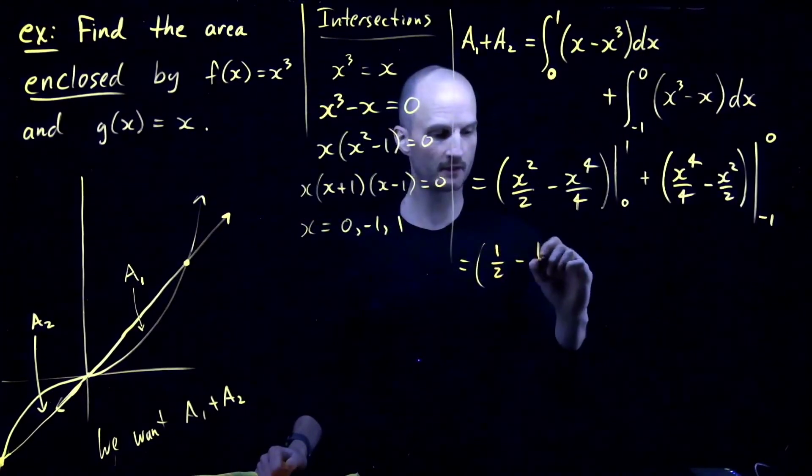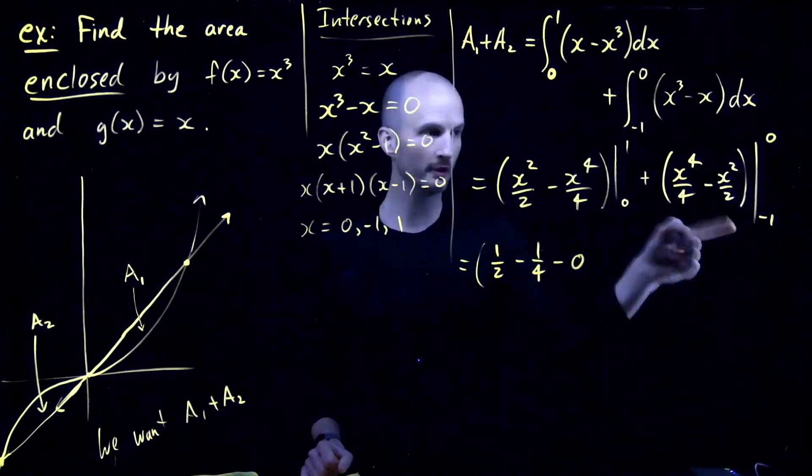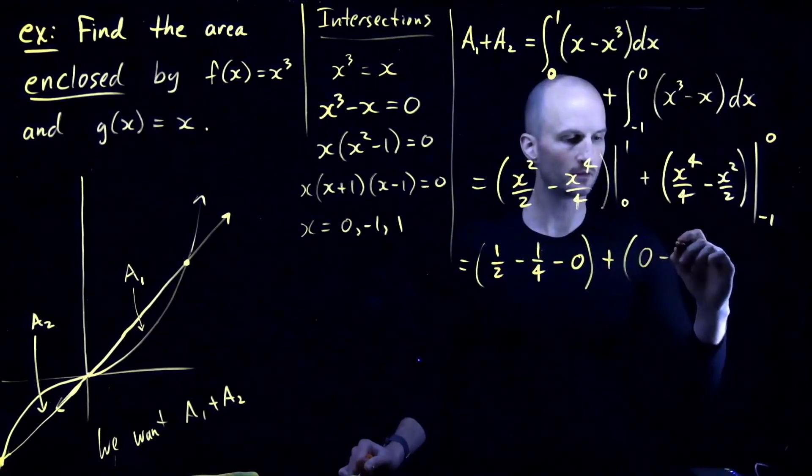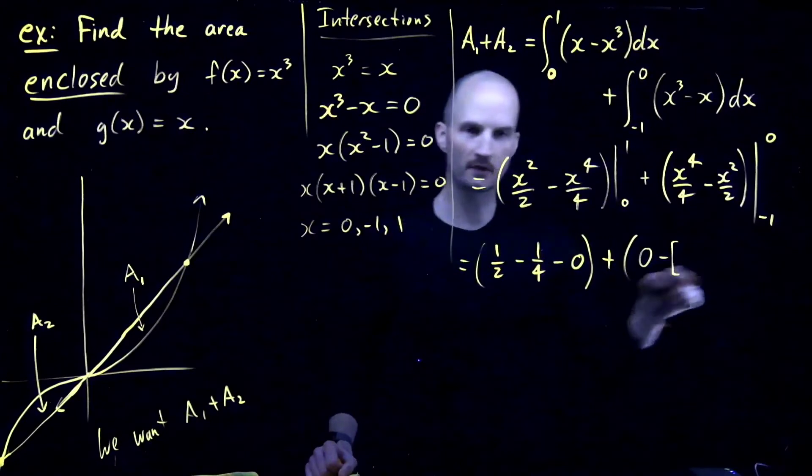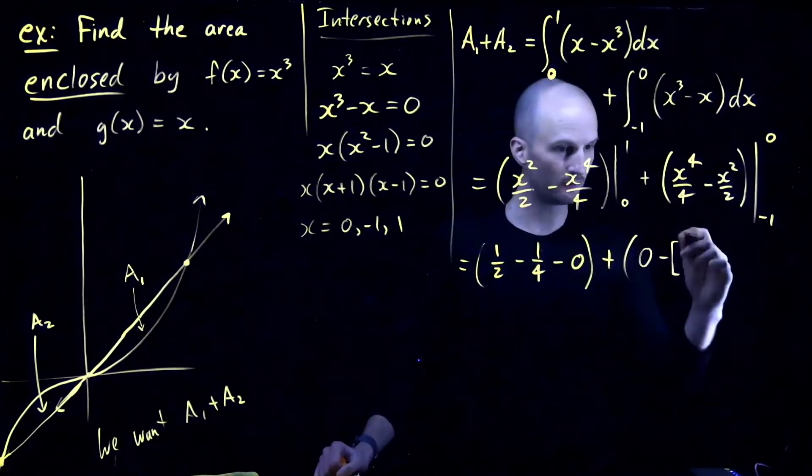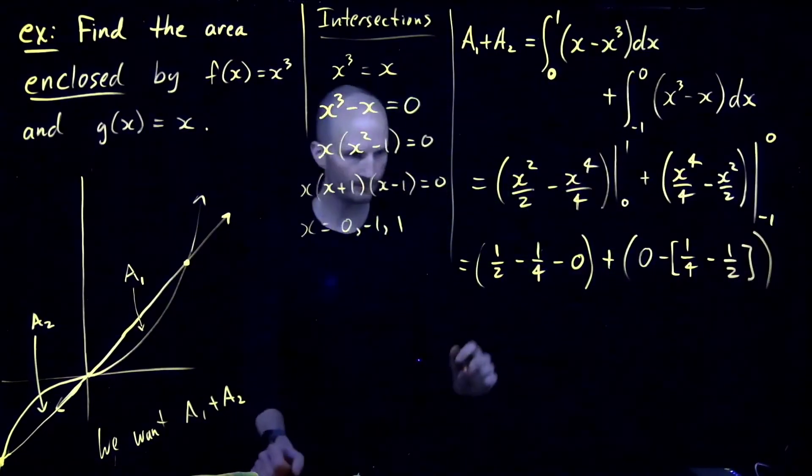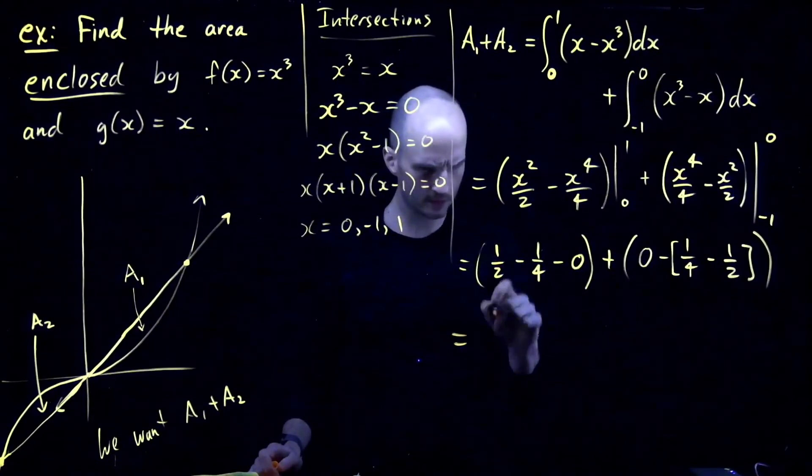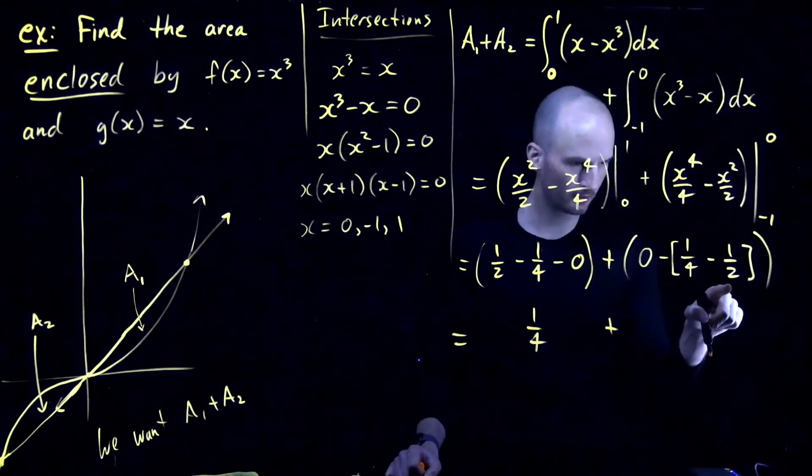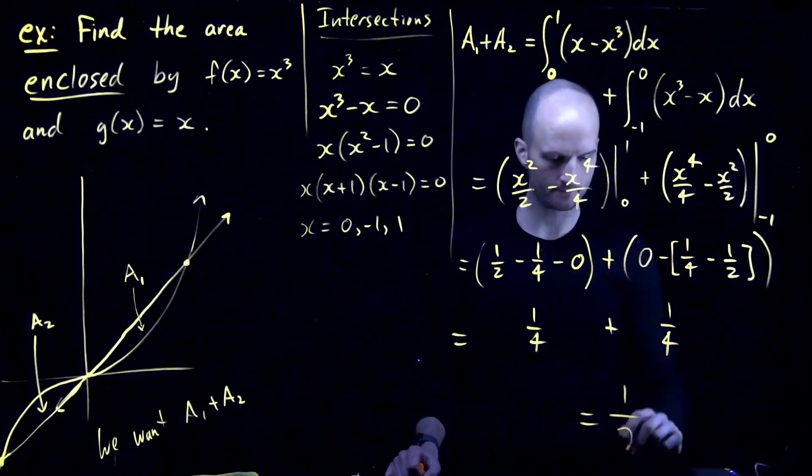Here, I get a half minus a quarter minus 0, right? When I plug in 0 into, you know, anything here, I'm going to get 0. Then plus this second part, I'm going to plug in 0, you get 0. Then when I plug in minus 1, I'm going to get something else. I'm going to use a square bracket because I used a curved bracket here. I'm going to plug in the negative 1, I get a quarter minus a half. Here I get a quarter plus negative quarter, but then plus a quarter.